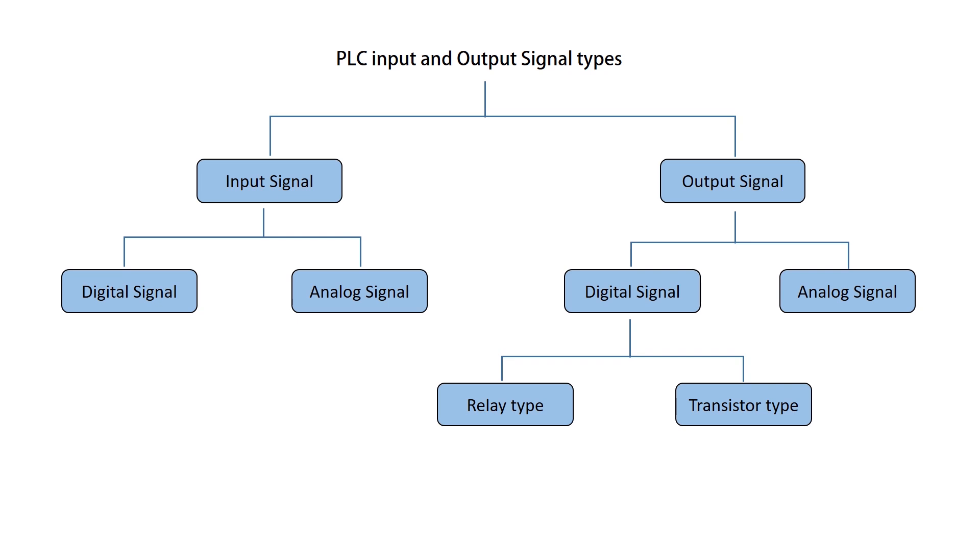Let's take a moment to get an overview of PLC input and output types. Then, we'll dive deeper into each topic. PLC input signals can be categorized into two main types, digital signals and analog signals. Similarly, PLC output signals can also be categorized into analog signals and digital signals. Digital output signals can be further divided into relay type and transistor type outputs.